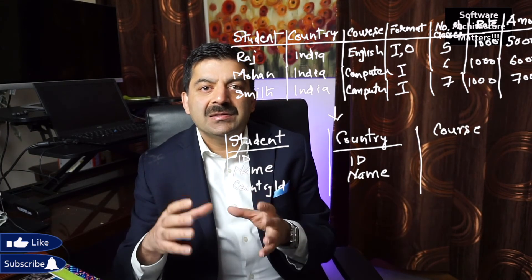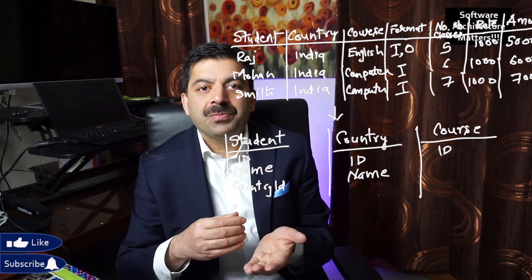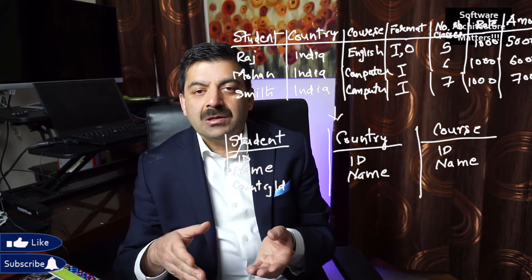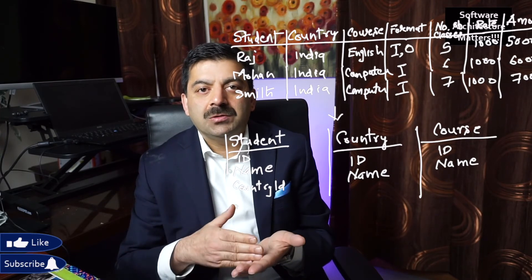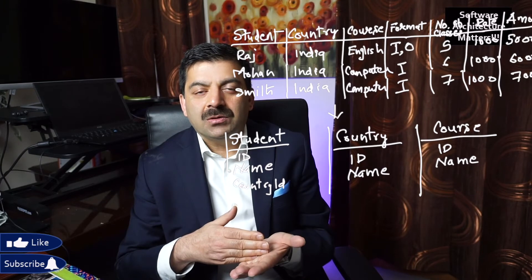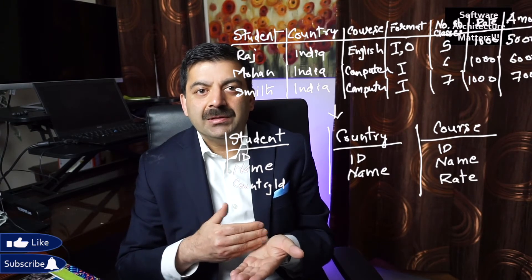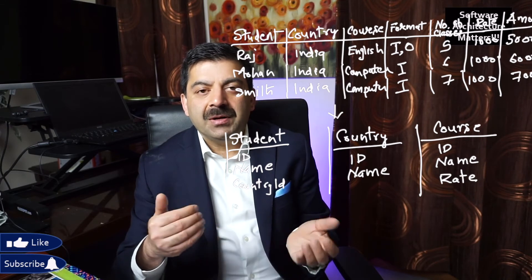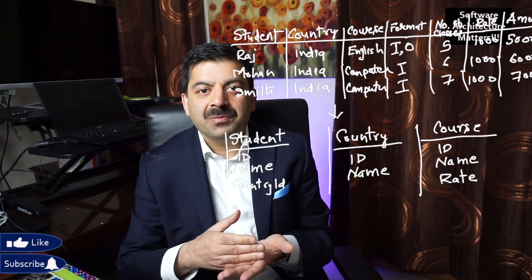A database is in Second Normal Form (2NF) if it is already in 1NF and has no partial dependencies. That means all non-key columns should depend on the full primary key. For example, course information has no dependency on the student — courses should be in their own table. We need to ensure all tables are designed so every column depends fully on the primary key.